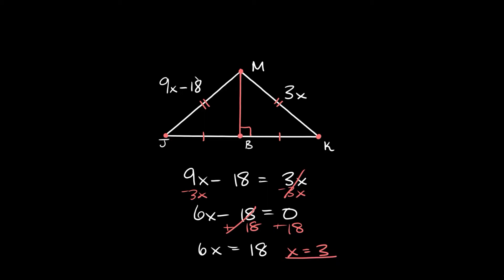So x is equal to 3. If you plug 3 into the simpler equation, 3 times 3 equals 9. So the distance from M to K is 9, and it's the same distance from M to J.